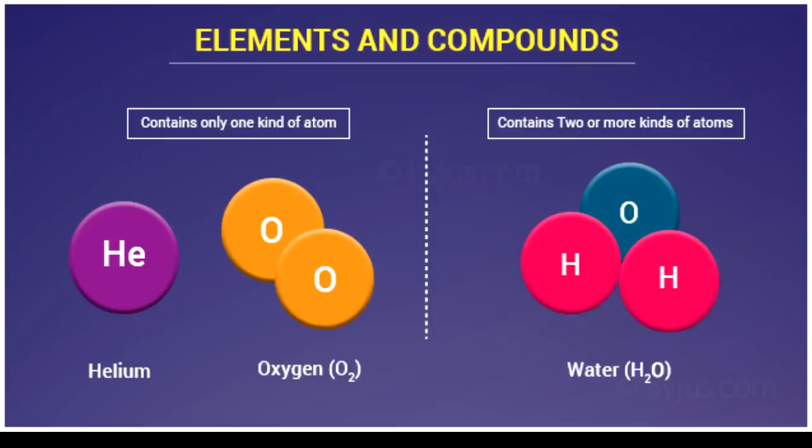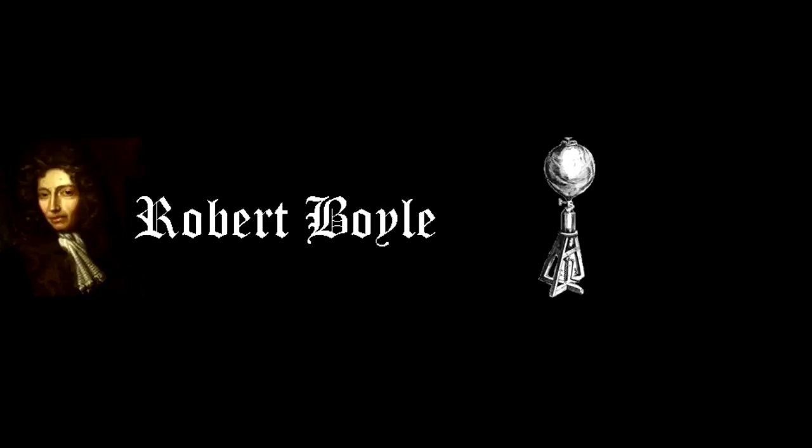Examples of compounds are water, sodium chloride, calcium phosphate. We have a compound formula — different kinds of atoms form a compound. Sugar is also an example of a compound. Same kind of atoms form elements. Elements are found in the periodic table.